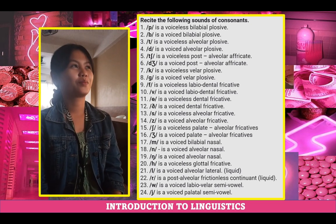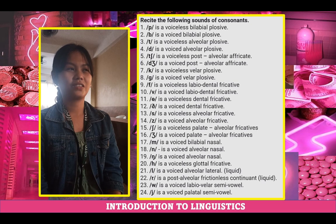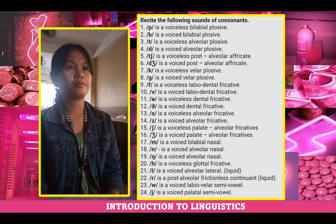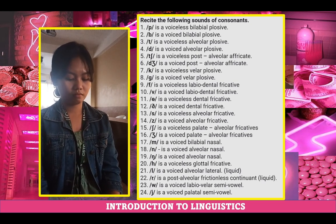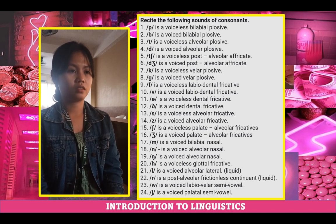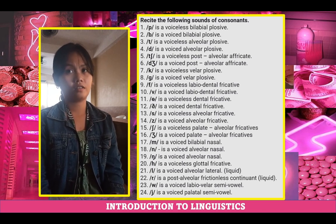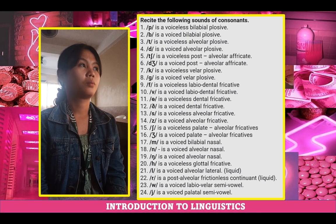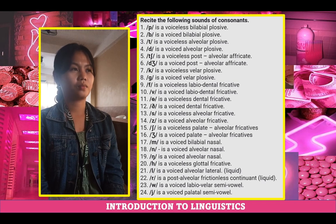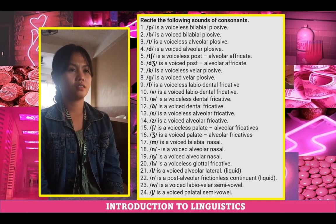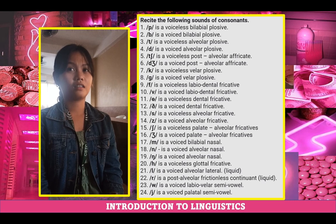Twenty-one: voiceless alveolar lateral liquid. Correct. Twenty-two: voiceless post-alveolar frictionless continuant liquid. Ur. Correct. Twenty-three: voiceless labio-velar semi-vowel. One. Correct. And last, number twenty-four: voiceless palatal semi-vowel. Ya. Correct.